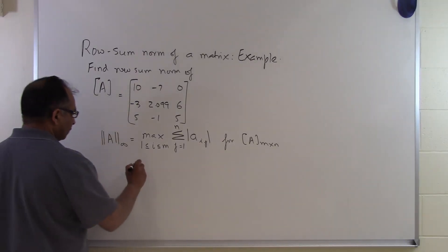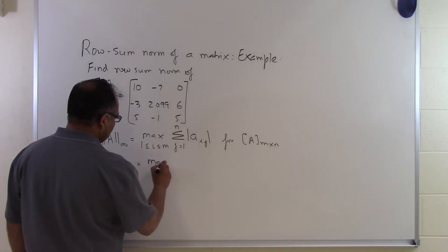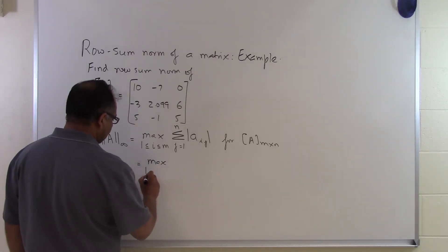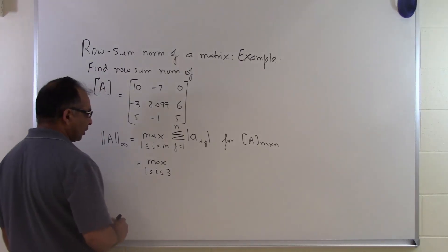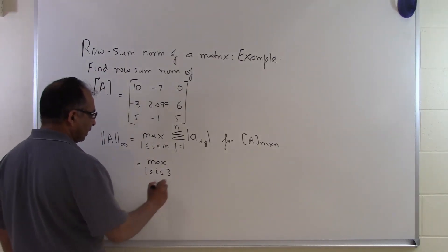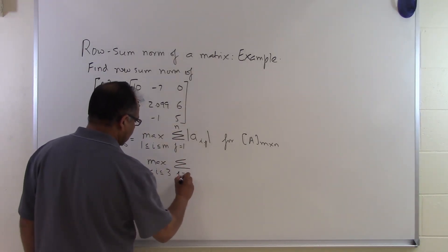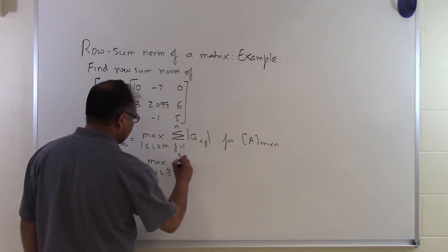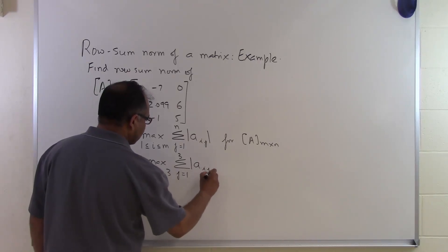So if we substitute the value of m, which is 3 — we have 3 rows and 3 columns, so m is 3 and n is 3 — we get the summation j equals 1 to 3 of the absolute value of a_ij.